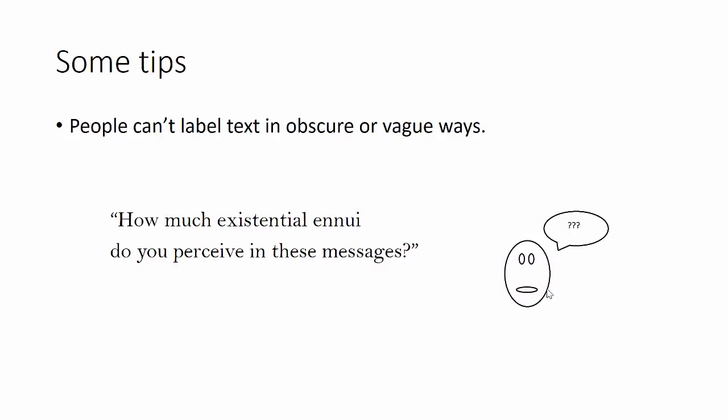In doing annotations, there are a few things you should consider. First, the trait you want to get at needs to actually have the potential to be identifiable in the text you're showing people. If it isn't, then no matter how well your raters are trained, they won't be able to pick up on anything.